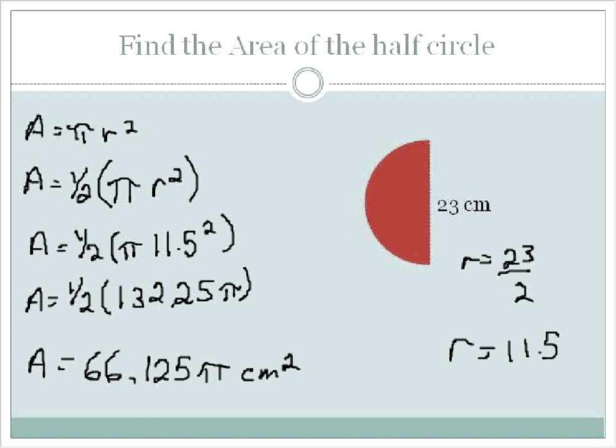And we can get the area, it doesn't really make a lot of sense to say 66 times pi. So let's go ahead and get an approximate area on that and find out what that is actually times pi. And the area is approximately equal to 207.7 centimeters squared. It's a little bit easier for us to understand. The pi symbol doesn't really mean anything unless we turn it into a number, and then it helps us to understand what the area is. So the area of this half circle is 207.7 centimeters squared.